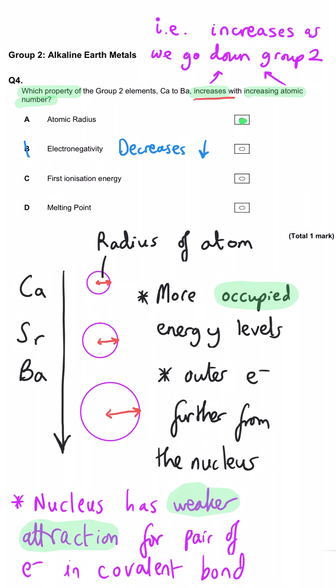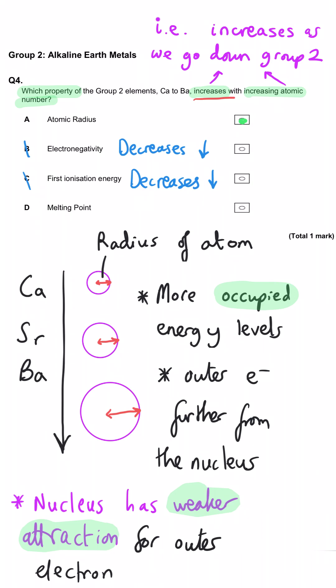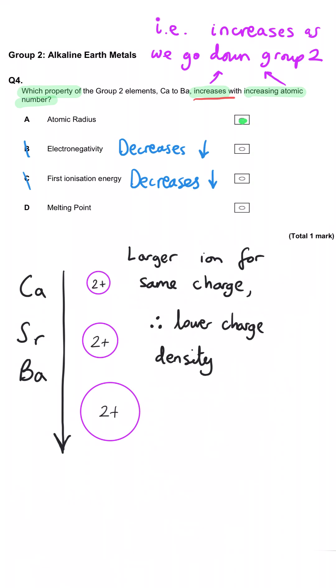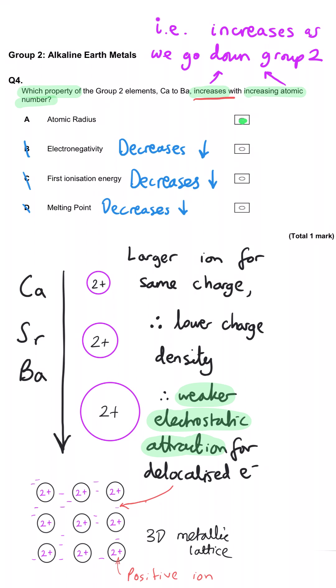Electronegativity decreases as a direct result of this larger radius, as there is a weaker attraction for the covalently bonded electrons. Similarly, first ionisation energy decreases down the group because as atomic radius increases, the nucleus's attraction for its outer shell electrons decreases. The melting point also decreases down Group 2 because the electrostatic attraction between the nucleus and the delocalised electrons is weaker as charge density decreases.